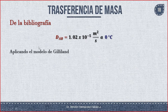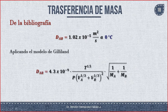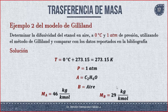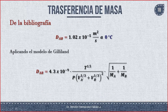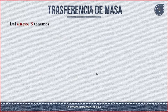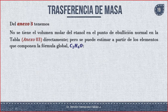Aplicando el modelo de Gilliland, hay que conseguir estos valores. Ya tenemos la temperatura: 273.15 K. El peso molecular de A es 46 y el de B es 29. Ahora falta conocer los volúmenes. Del anexo 3 no se tiene el volumen molar del etanol.